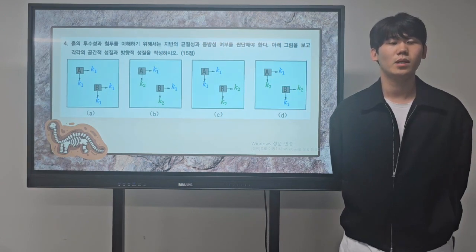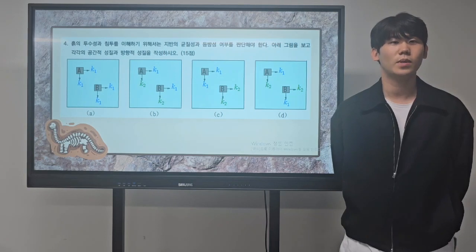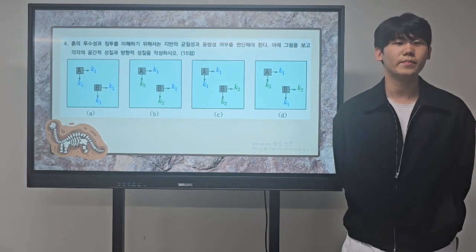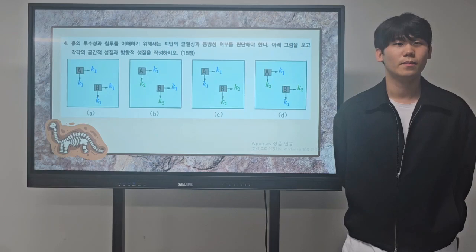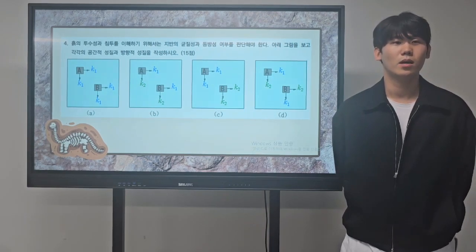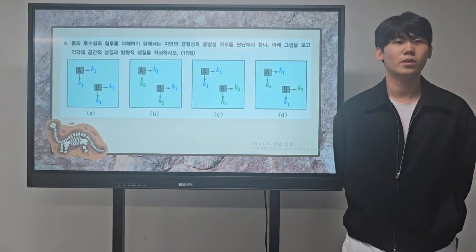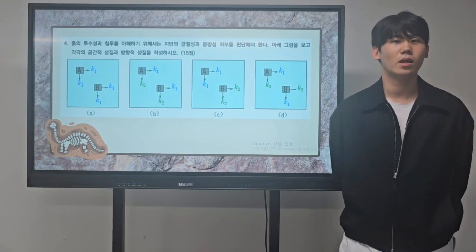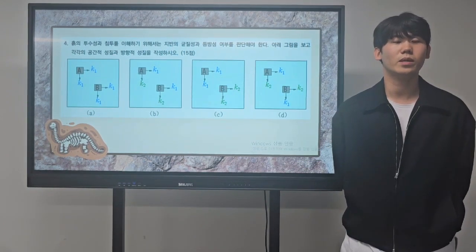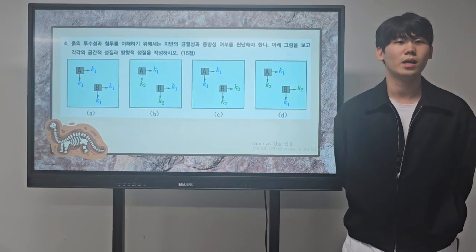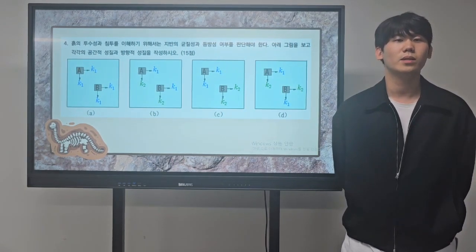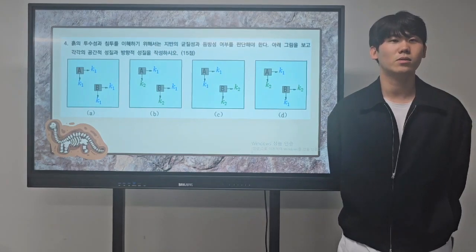Second, in case B, the horizontal equivalent permeability coefficient of soil particles A and B is the same as K1, and the vertical equivalent permeability coefficient is the same as K2. So in case B, the soil particles are homogeneous and anisotropic.